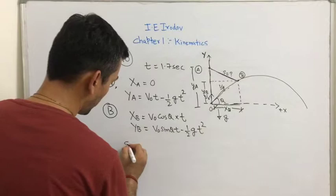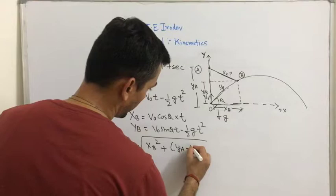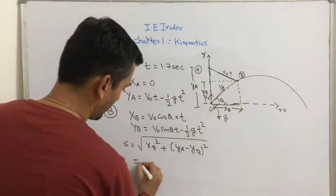What will be the distance s between the two points is equal to the root of xB square plus yA minus yB whole square. As simple as that.